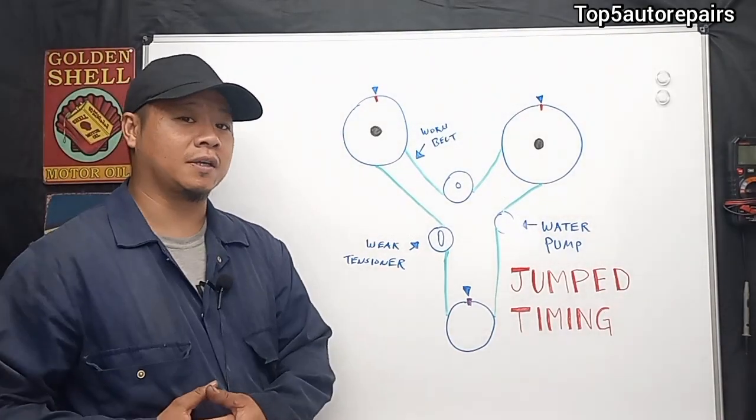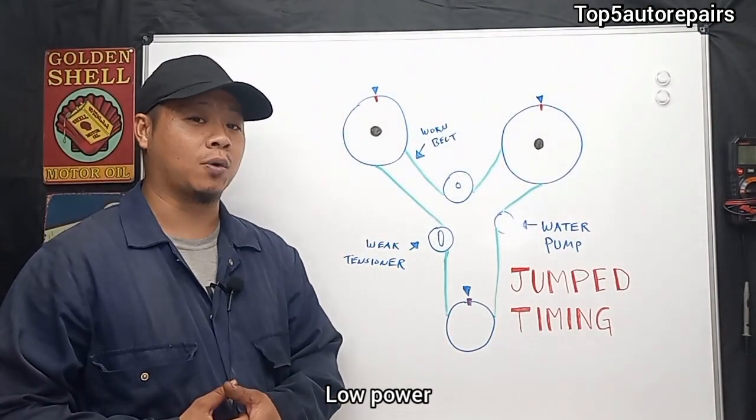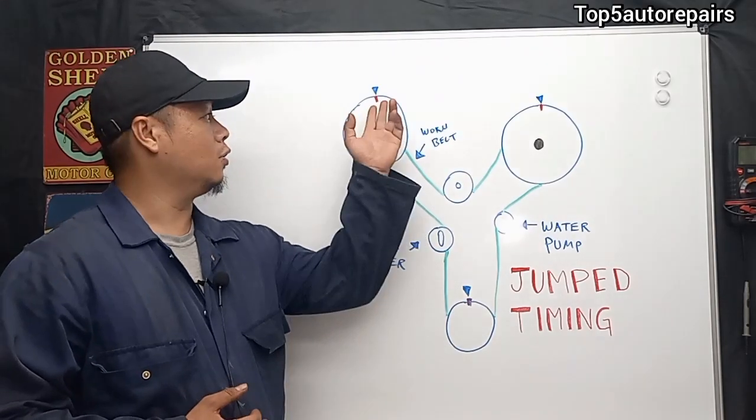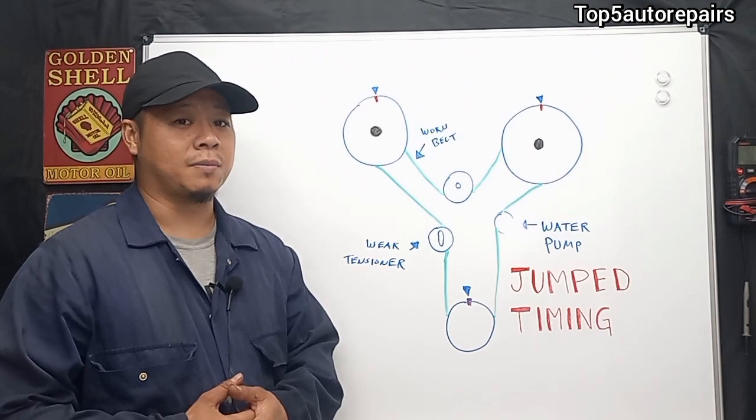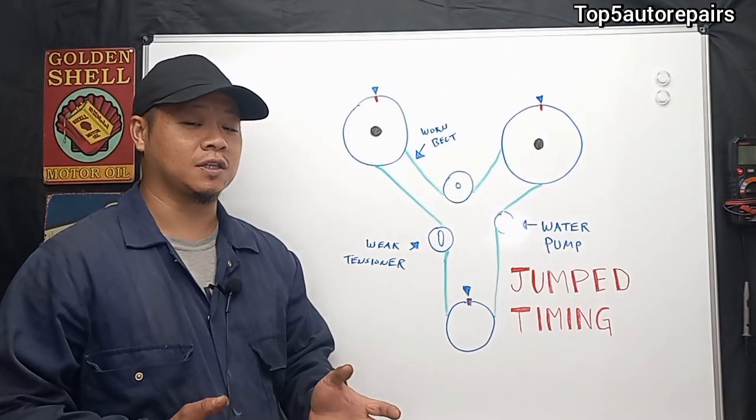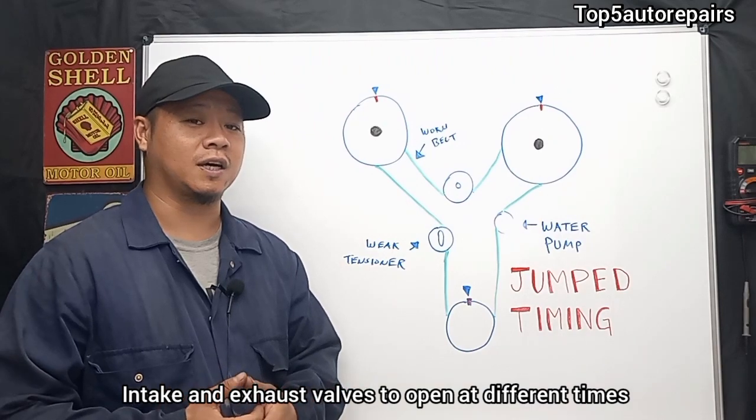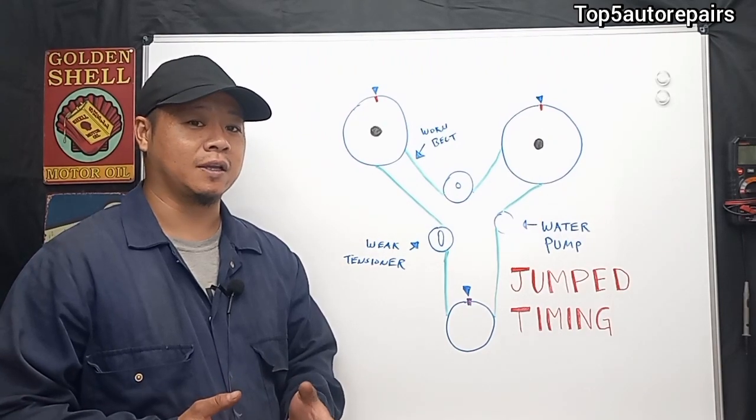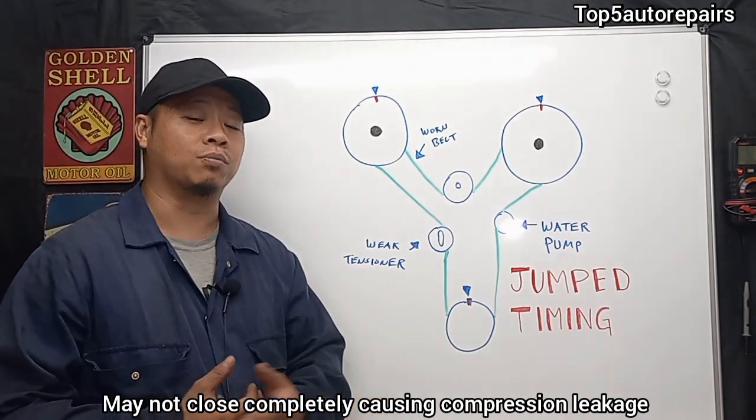So basically, the first common sign that you're going to notice that timing has jumped is most likely going to be low power. This is due to one or two multiple teeth that has jumped. And basically what this is going to do is cause the intake and exhaust valve to open at different times, and when that happens it may not close completely and cause low compression.